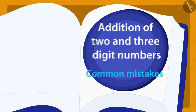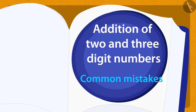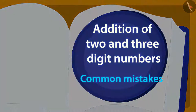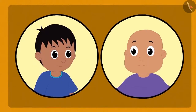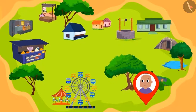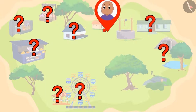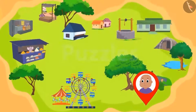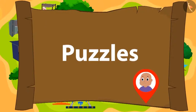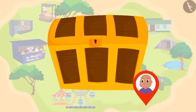Children, till now we have learned about the addition of two and three digit numbers using the carry-over method. In this lesson, we will look at some common mistakes related to it. Raju and Bablu are playing a unique game. Raju has hidden some puzzles for Bablu in the village. After solving each puzzle correctly, Bablu will reach the location of the next puzzle, where he will find another puzzle.